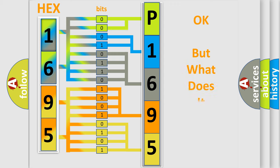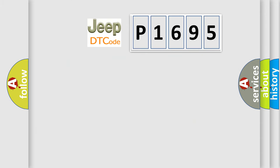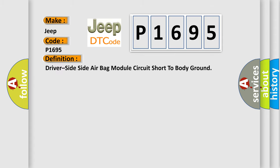We now know in what way the diagnostic tool translates the received information into a more comprehensible format. The number itself does not make sense to us if we cannot assign information about what it actually expresses. So, what does the Diagnostic Trouble Code P1695 interpret specifically for Jeep car manufacturers?